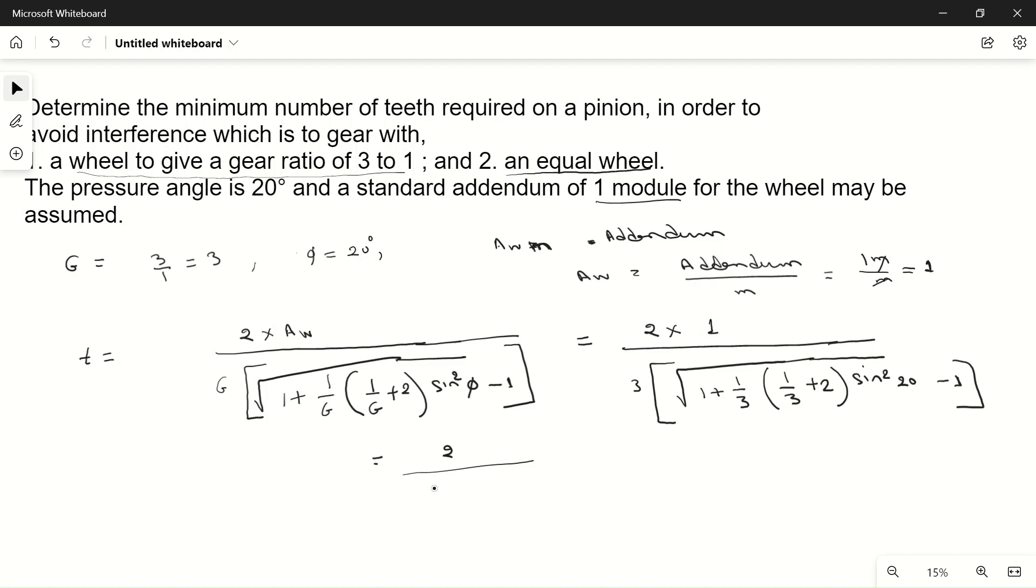If you calculate this value, you will get 2 divided by 0.133, which equals 15.04. This is the minimum number of teeth required. We can have more than this but not less, so the minimum number will be the next integer, which is 16, because teeth cannot be in fractions.